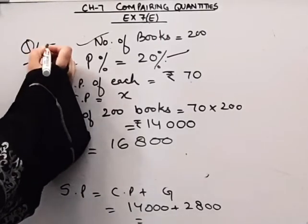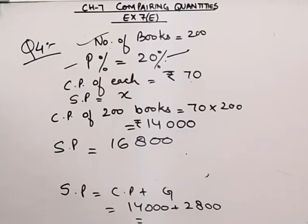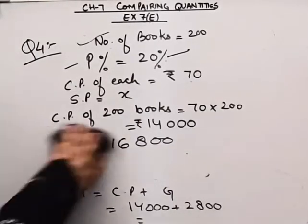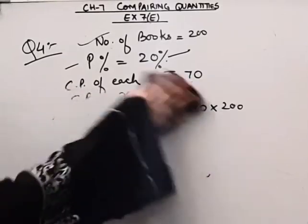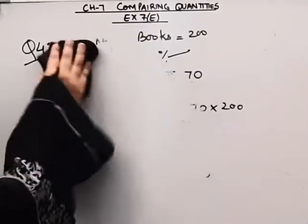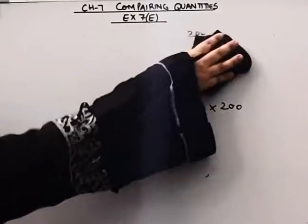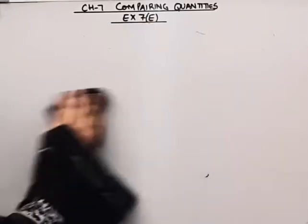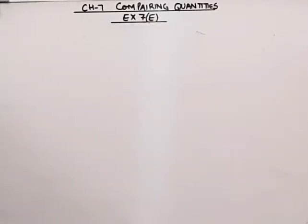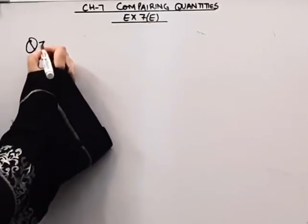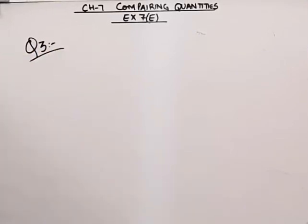Now we will do question number three. Question number three is: by selling an article for rupees 9,900, Shashank gains 10 percent. You have to find out his cost price.